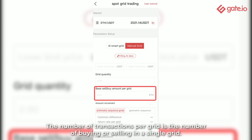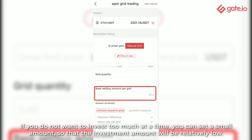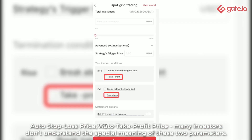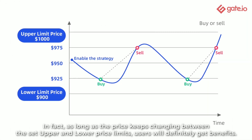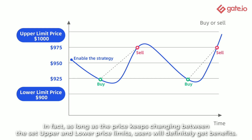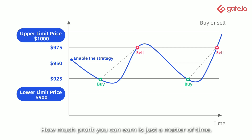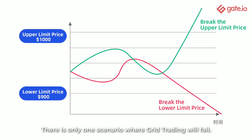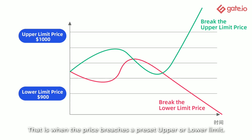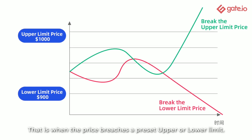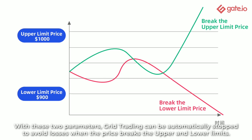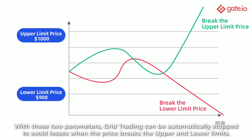The number of grid transactions per grid is the number of buys or sells in a single grid. If you don't want to invest too much at a time, you can set a small amount so that the investment amount will be relatively low. Auto stop loss price and auto take profit price — many investors don't understand the special meaning of these two parameters. In fact, as long as the price keeps changing between the set upper and lower price limits, users will definitely get benefits. How much profit you earn is just a matter of time. There is only one scenario where grid trading will fail: when the price breaches a preset upper or lower limit. With these two parameters, grid trading can be automatically stopped to avoid losses when the price breaks the upper or lower limits.